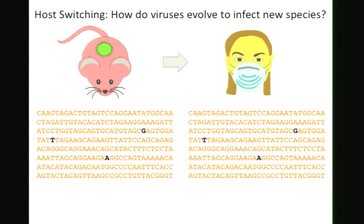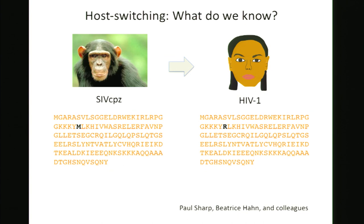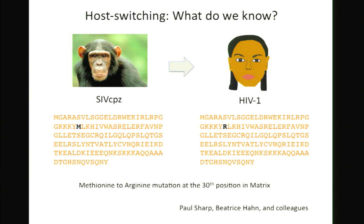We believe this process begins when a jackpot series of mutations arise that give the virus a foothold into a new species. This example comes from one of the most famous zoonoses ever — the cross-species transmission of simian immunodeficiency virus from chimpanzees to humans. Paul Sharp and colleagues noticed that each time this transmission had occurred, it was accompanied by the same methionine to arginine mutation at the 30th position in the matrix protein. And if you take HIV and passage it back through chimpanzees, this mutation reverts.